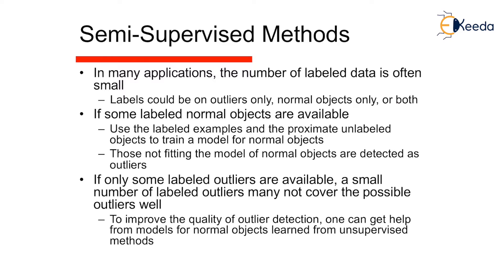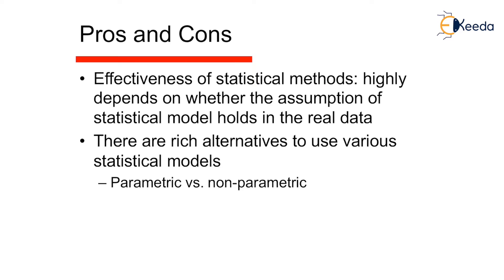The third type is semi-supervised. In many applications the number of labeled data is often small. Labels could be on outliers only, normal objects only, or both. If some labeled normal objects are available, use the labeled examples and approximate the unlabeled objects to train a model for normal objects. Those not fitting the model are detected as outliers. If only some labeled outliers are available, a small number of labeled outliers may not cover all possible outliers well. To improve detection quality, one can get help from models for normal objects learned from unsupervised methods.